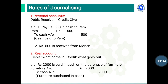Second — real account: what comes in is debited and what goes out is credited. For example, Rs.2000 is paid in cash on the purchase of furniture. The two accounts are furniture account and cash account. Furniture comes in, so the furniture account is debited with Rs.2000, and the cash account is credited with Rs.2000.